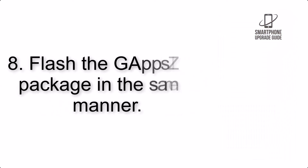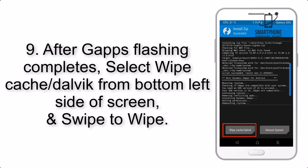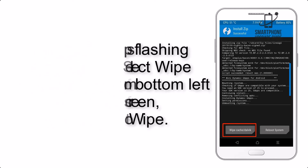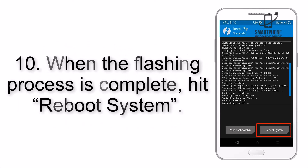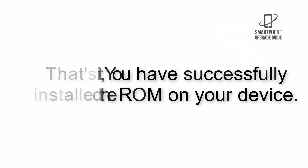Step 7: Swipe the button on the screen to install the ROM file. Step 8: Flash the GApps zip package in the same manner. Step 9: After GApps flashing completes, select Wipe Cache and Dalvik from the bottom left side of the screen and swipe to wipe. Step 10: When the flashing process is complete, hit Reboot System. That's it — you have successfully installed the ROM on your device.